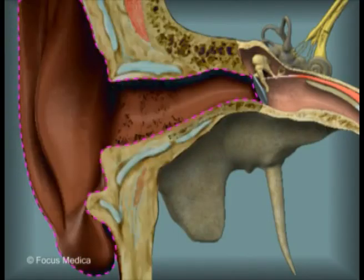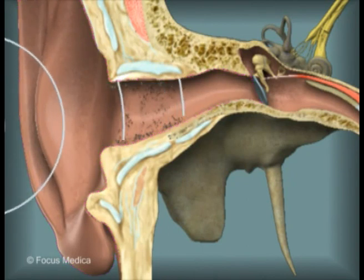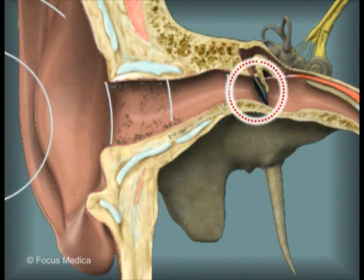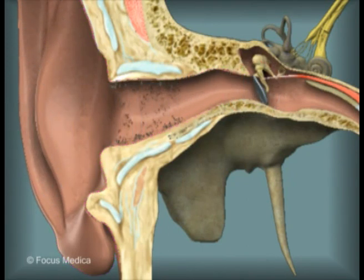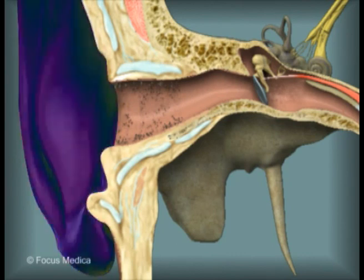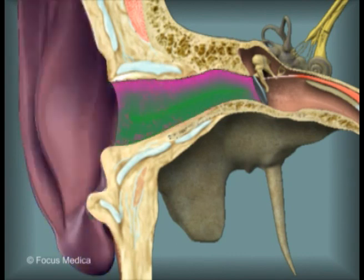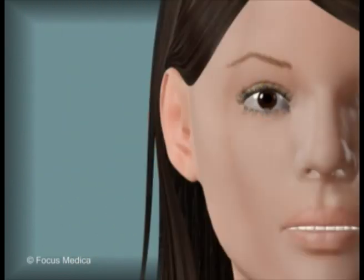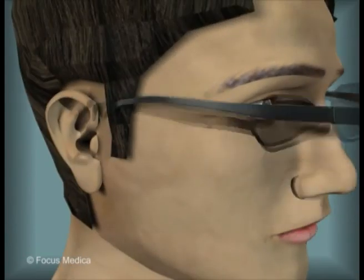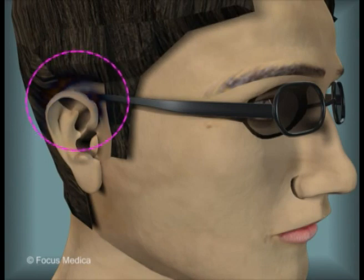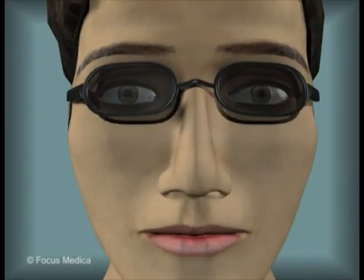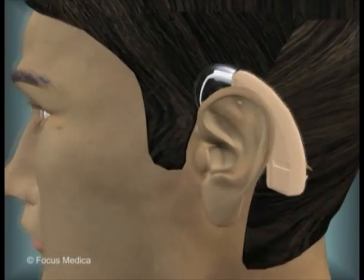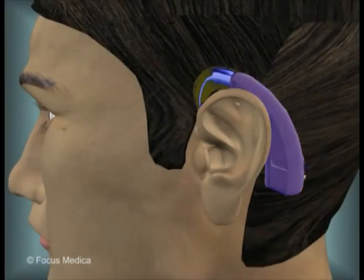The external ear collects sound waves and presents them to the tympanic membrane. It consists of the pinna and the external acoustic meatus. Being located at a strategic location, it is also a highly ornamented organ, like the eye and the nose. Its upper surface provides a robust supporting platform for holding a spectacle, as well as an external artificial ear in position.